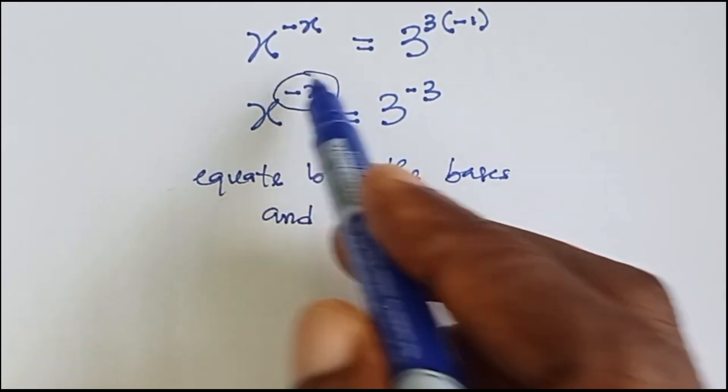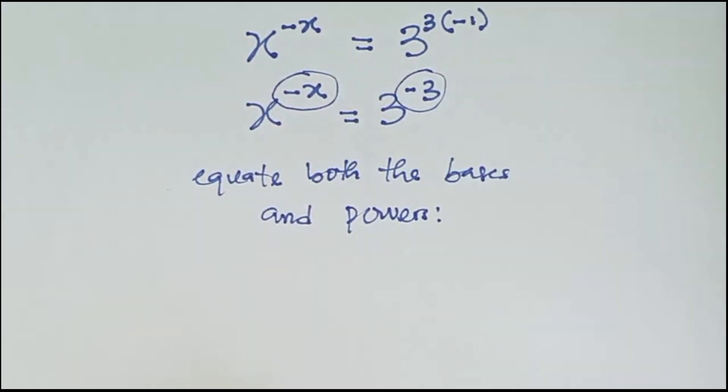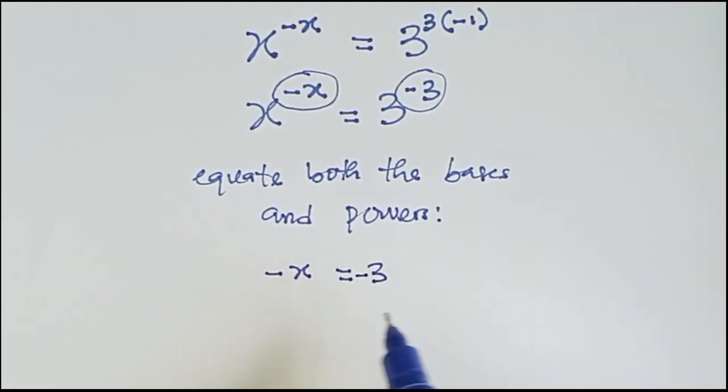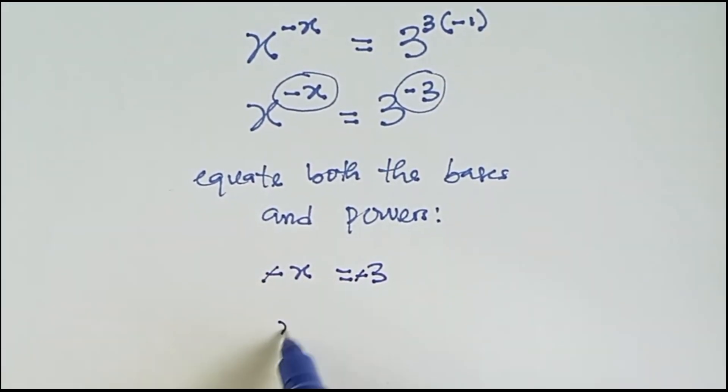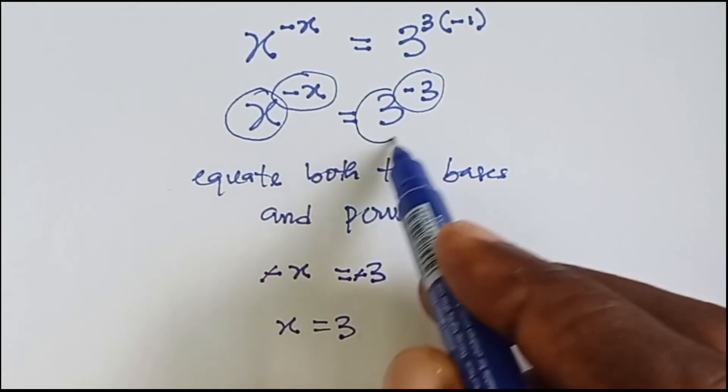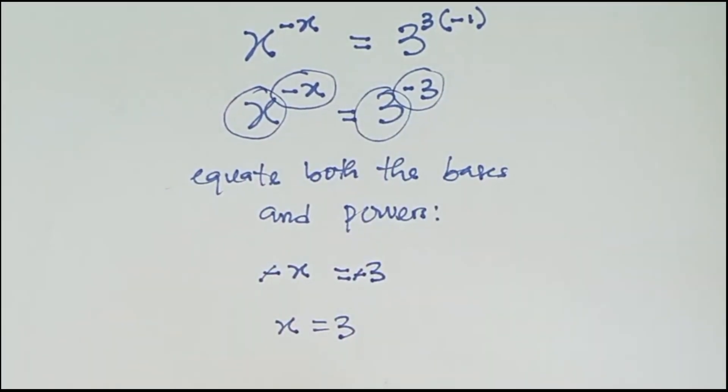So what it means is let's equate the powers. Minus x equals to minus 3. So we have minus x equals to minus 3, and then minus cancel minus. What is x? x equals to 3. And even when we equate the bases, you can see that x equals to 3. So that means that x is equals to 3.